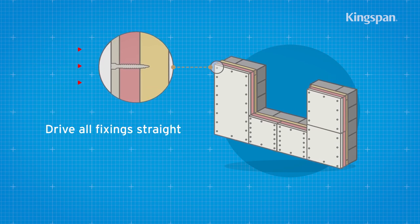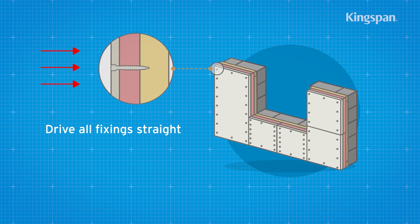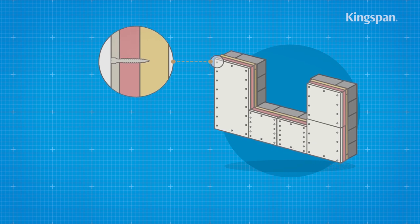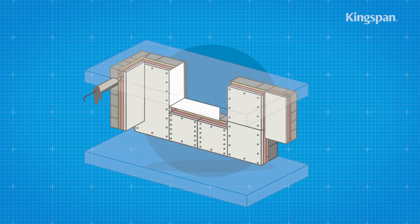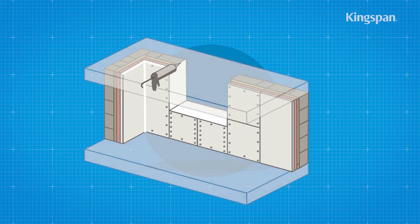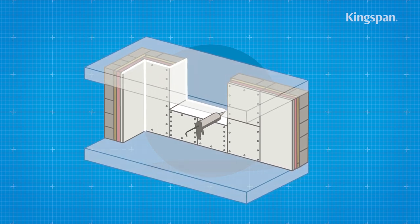Drive all fixings straight with heads embedded just below the surface of the plasterboard. To finish, seal the perimeter of the insulated plasterboard with a flexible sealant or equivalent.